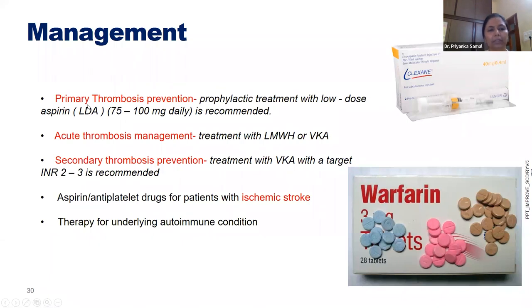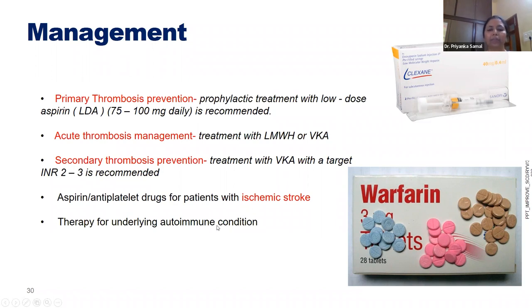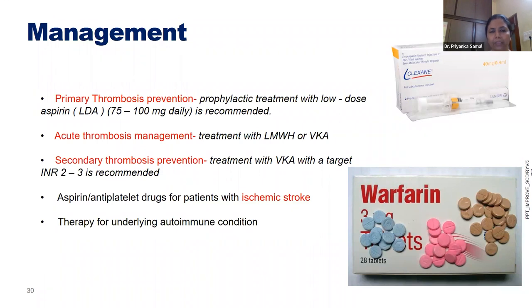Management of APS: although platelet counts are low, thrombosis is the primary concern. Primary thrombosis prevention with low-dose aspirin 75–100 mg daily. Acute thrombosis with low molecular weight heparin or warfarin. Secondary thrombosis prevention with warfarin targeting INR 2–3. Aspirin and antiplatelets for ischemic stroke. If secondary APS, the underlying autoimmune condition must be addressed. Importantly, DOACs do not have a good role in managing APS thrombosis — especially when all three antibodies are positive, where anticoagulation coverage is insufficient with DOACs.